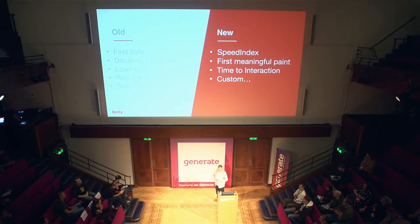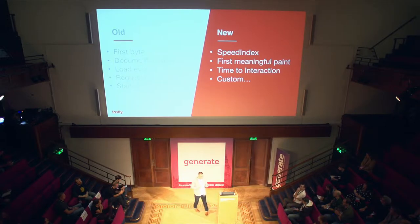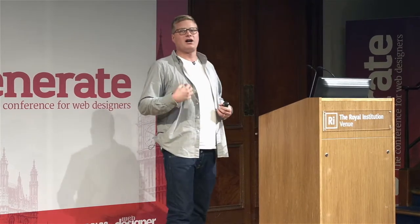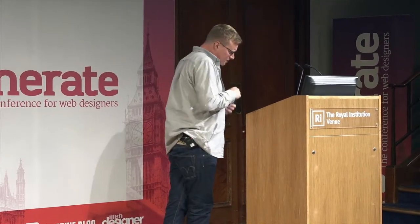Fortunately, times are changing. We now have a rise of metrics: speed index, the first meaningful paint — which is why I'm here — and time to interaction. How long did it take for your user to actually be able to interact? We throw a lot of JavaScript at our pages now. And custom metrics — I can't stress this enough — custom metrics specific to your business needs and why the user came there. On the Guardian, that might be how long it took to find an article. For Twitter, it's time to rendering a tweet. For an e-commerce site, it might be how long checkout took.